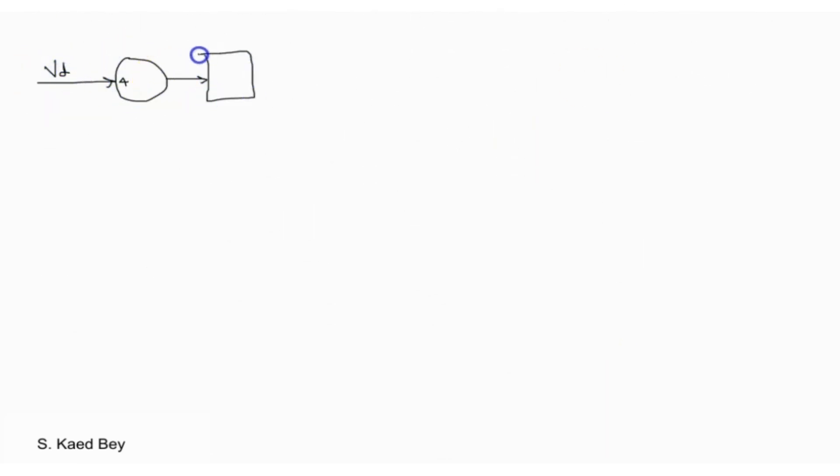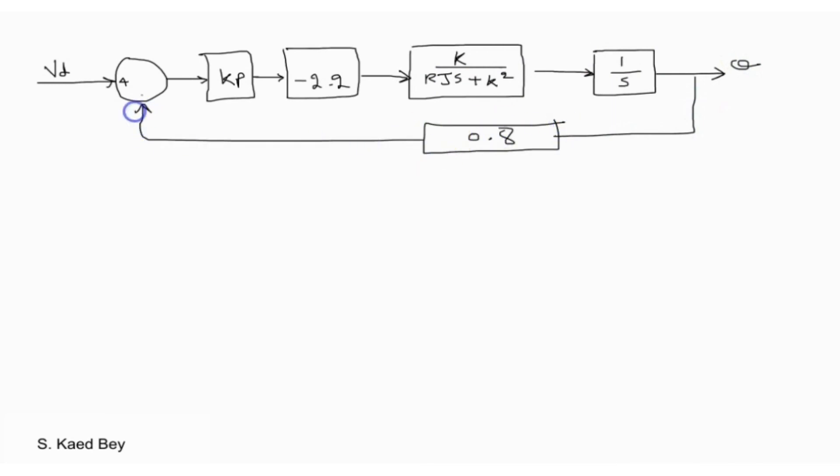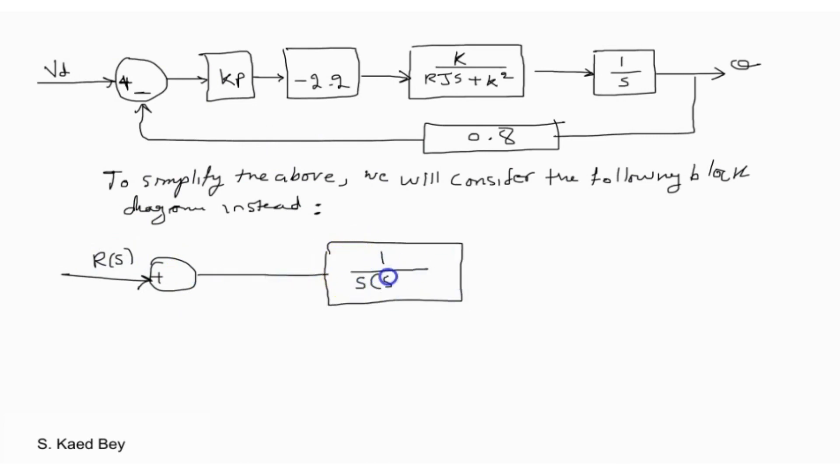We can now redraw the block diagram as follows. To reduce the calculations involved in the coming videos and since our main objective is to compare the Z domain and the S domain for a second order system and discuss the effect of the sampling time on the response, we will assume for this example that all the coefficients are equal to 1.